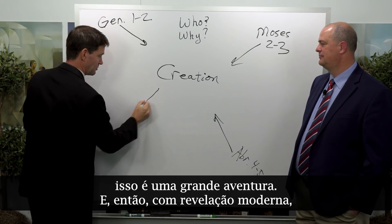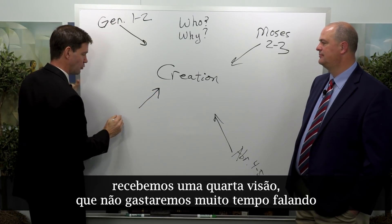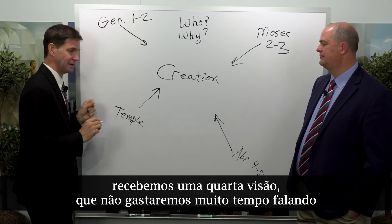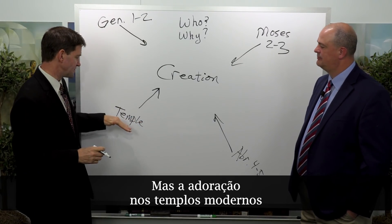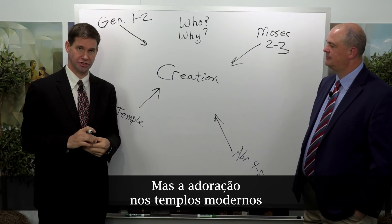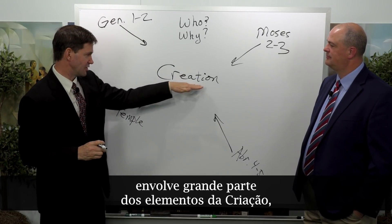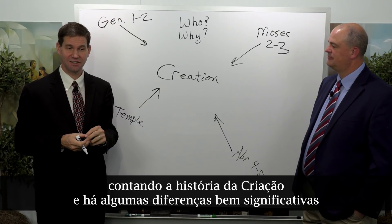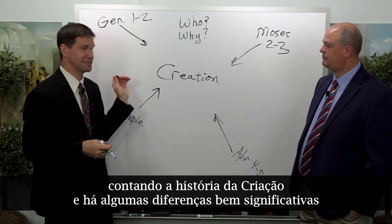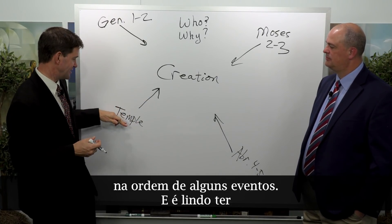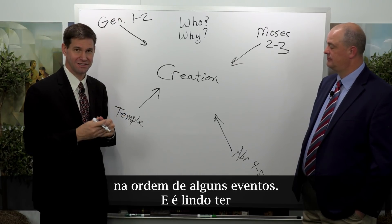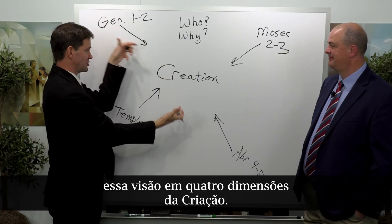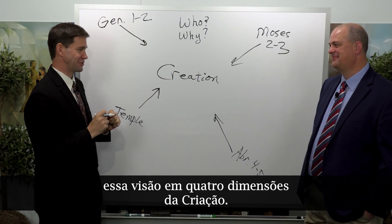With modern revelation, we get a fourth view — we won't spend a lot of time on it in this episode — but modern temple worship involves a great deal of creation elements and telling the creation story, and there are some significant differences in the order of events. It's beautiful to have this four-dimensional view of the creation.